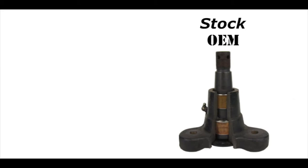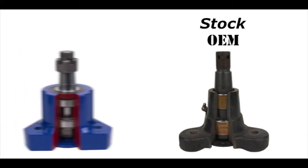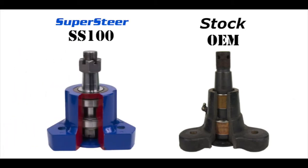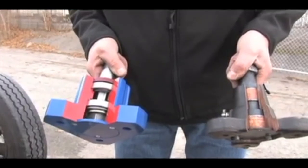This is a comparison between the stock OEM bell crank versus our SS100 bell crank. You'll find these mounted on the driver side frame rail on the Freightliner XC chassis and also the Magnum chassis as well.